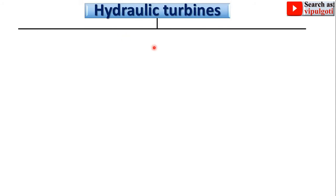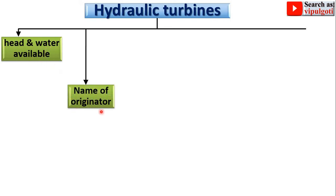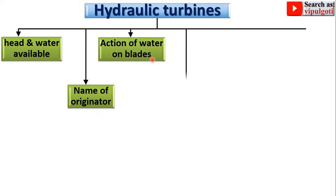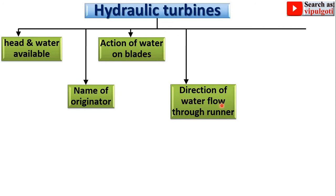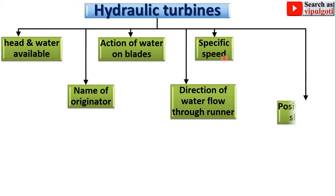The classification of hydraulic turbines is divided in many ways: according to head and water available, according to name of originator, according to the action of water on blades, according to the direction of water flow through the runner, according to specific speed, and according to position of shaft. These are the main ways to classify hydraulic turbines, although there are other ways as well.